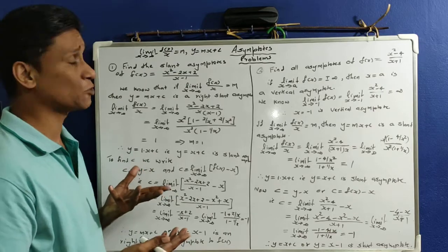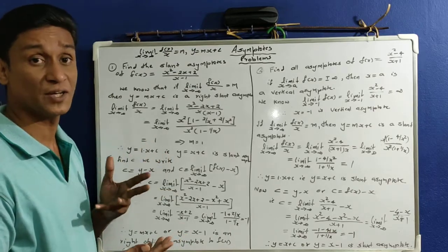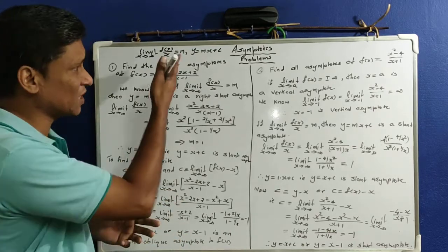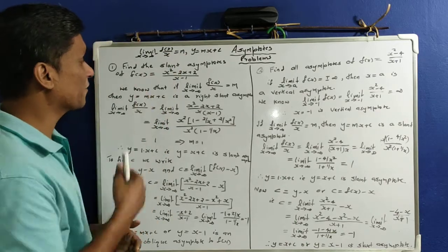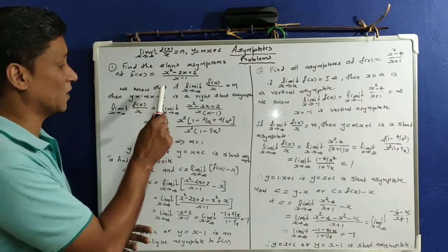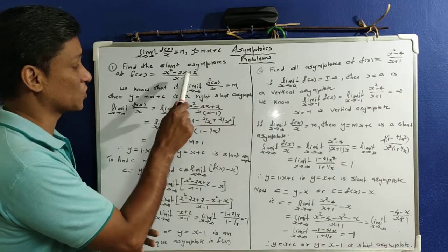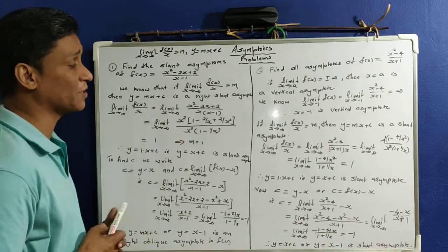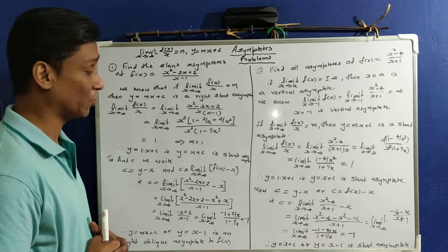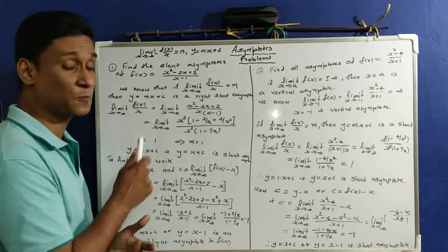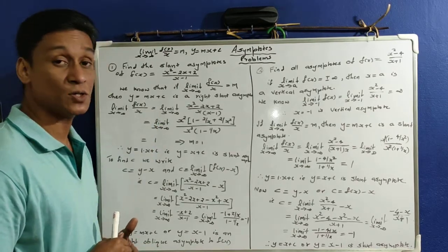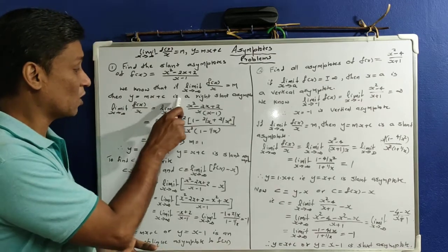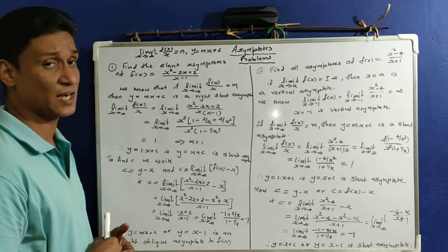For the right slant asymptote, we use the limit as x tends to infinity of f(x)/x equal to m, and then y = mx + c is the right slant asymptote. For the left slant asymptote, we use the limit as x tends to minus infinity.